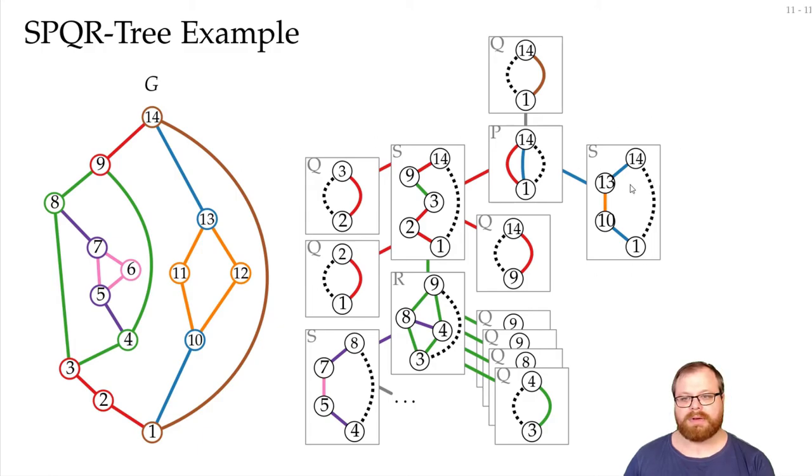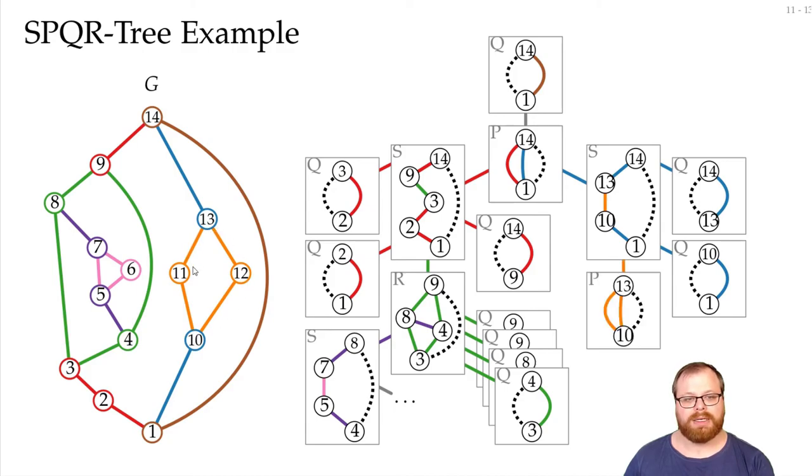And we do the same thing on the right. We have two edges here. That gives us two Q nodes. And this, again, here gives us a smaller node. And that's clearly a P node. We have these two parallel paths. Each of these edges gives us an S node. And that gives us two Q nodes. And from that, we get the SPQR tree of this graph.